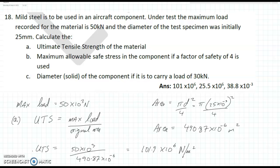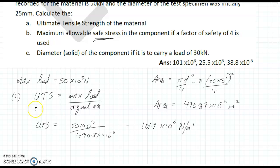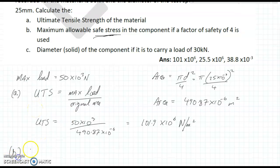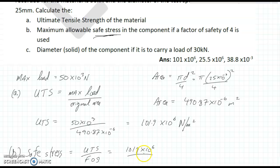Part B, then, we want to work out the maximum allowable safe stress. Safe stress in the component if a factor of safety of 4 is used. So, we need a formula for that. So, the safe working stress equals the ultimate tensile stress divided by the factor of safety. So, that's going to be 101.9 by 10 to the 6 divided by 4. And, that comes out at 25.5 by 10 to the 6 newtons per square meter. So, that's the maximum allowable safe stress there.